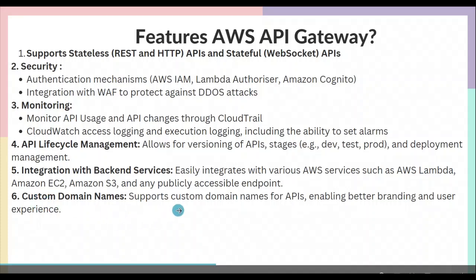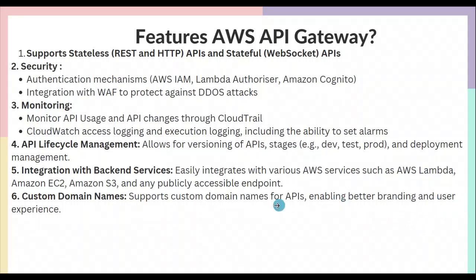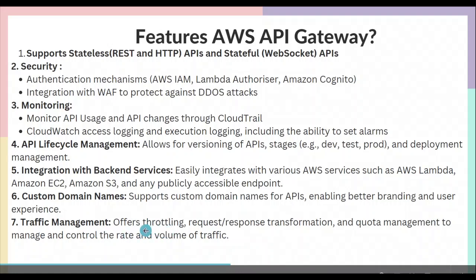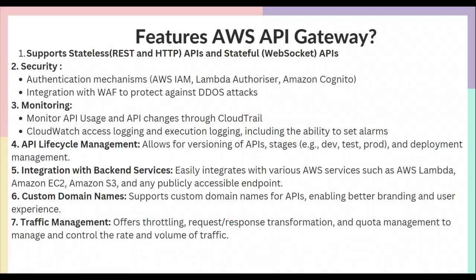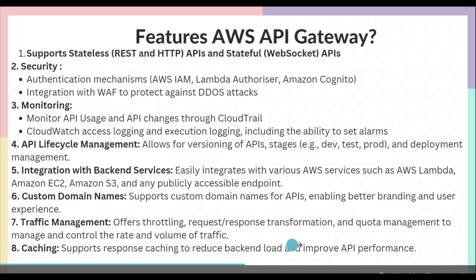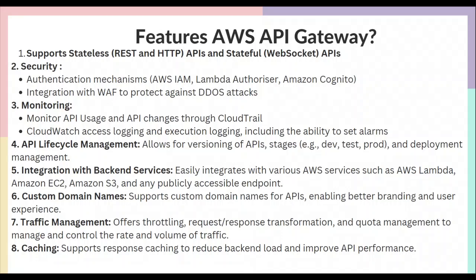API Gateway supports using custom domain names for your APIs. For traffic management, it offers throttling, request/response transformation, and quota management — for example, restricting a particular user to 100 API calls using API keys. Finally, it supports response caching to reduce backend load and improve API performance: if a user makes repeated identical API requests, the response is cached and returned faster, reducing load on backend services. These are some of the important features of Amazon API Gateway.